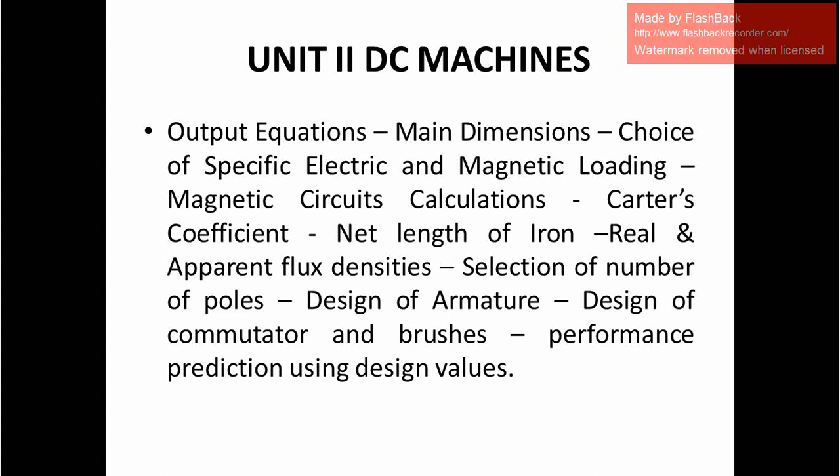Unit 2 covers DC machines, where the real design work begins. The output equations and main dimensions are derived. The EMF equation, already studied in Electrical Machines 1 and 2, is used directly here to derive the output equations, output coefficient, and main dimensions — that is, the diameter and length. The choice of specific electric and magnetic loading is also made here, considering average magnetic flux density and the total number of ampere-conductors required.